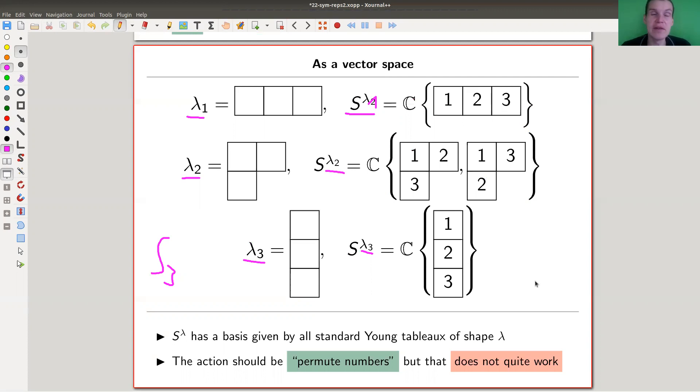As a vector space, I would like to associate a representation s^λ for each Young diagram. I already told you about this formula to count dimensions. We'll use that by defining a module on what we expect to be the correct dimension. So I define a module S^λ to be the vector space given by all standard tableaux.